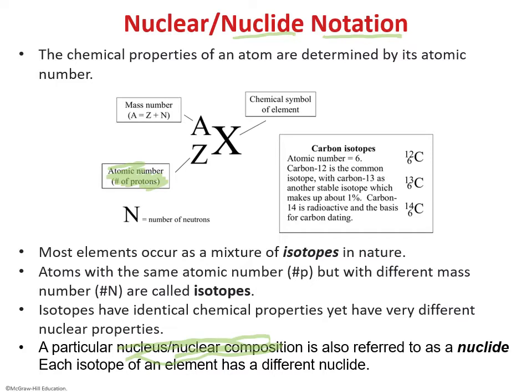A, in the notation, is the mass number, which is the total number of nucleons — protons and neutrons — present in an atom. From the periodic table, carbon-12 has six protons and a mass number of 12, so the number of neutrons is 12 minus 6, which equals 6.